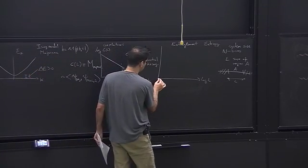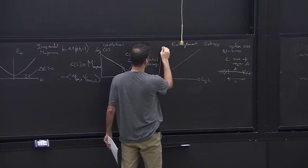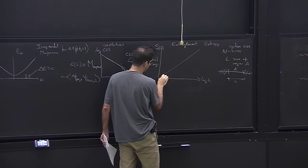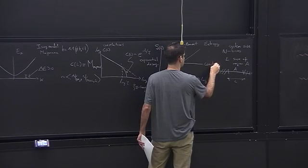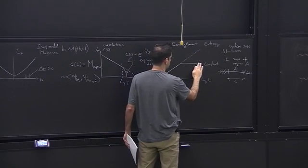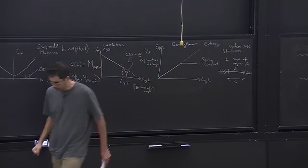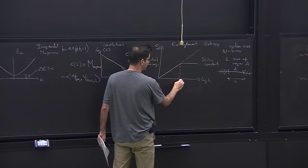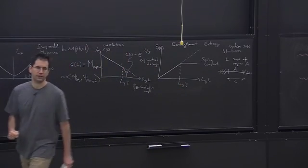If we look at entanglement entropy, plotting S of L, what we observe is: first a logarithmic scaling, and at some point it saturates to a constant. So the entropy goes to a constant for a gapped system. This happens when L is on the order of the correlation length in the system. These are statements you can check — we are testing this for free fermions, but this is a very general statement observed in one-dimensional systems when there is a gap in the Hamiltonian.